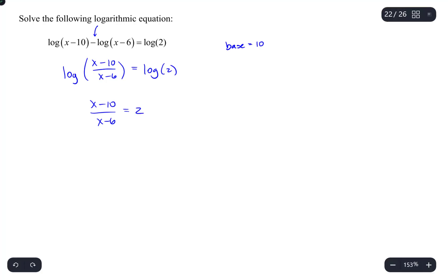Now, the next step in solving is to try and get the variable by itself, and to do that, we need to get this variable out of the denominator. So, I'm going to multiply both sides by x minus 6.